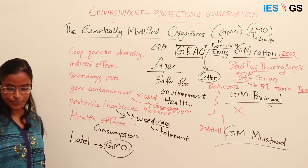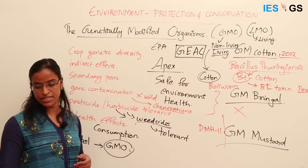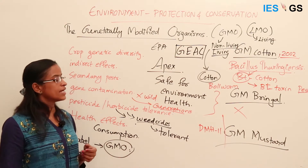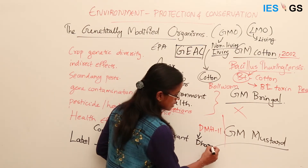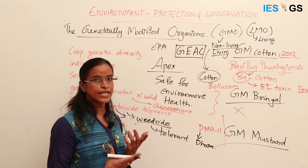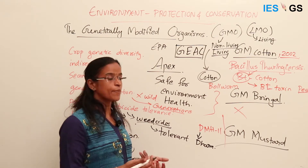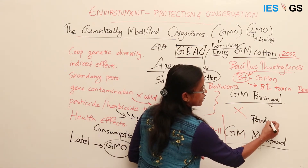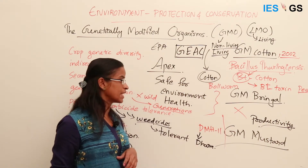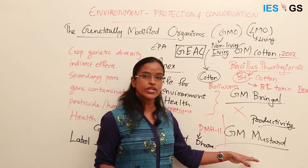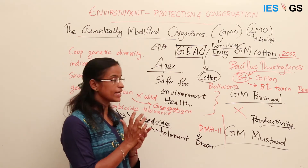The latest development in GM crops is GM Mustard, which was indigenously developed in India. It is called Dhara Mustard Hybrid. Mustard is a self-pollinating plant, meaning it does not require external pollination and outcrossing is very difficult. This limits the productivity of mustard and makes it hard to create hybrids. GM Mustard attempts to overcome this limitation and enable hybridization.